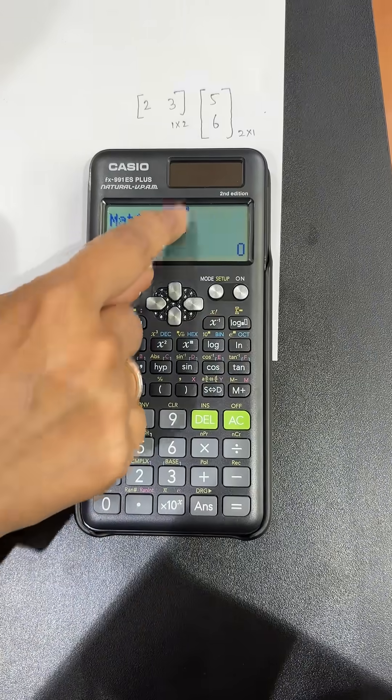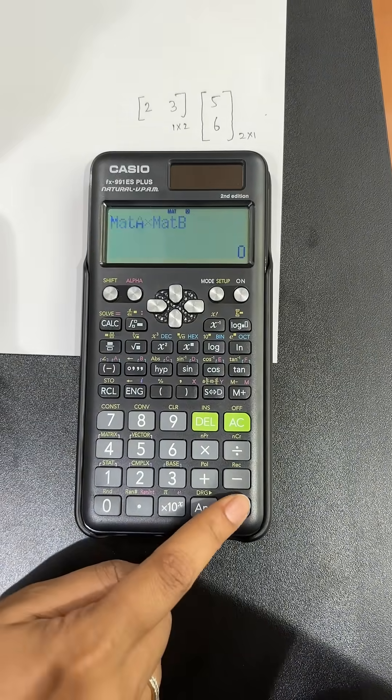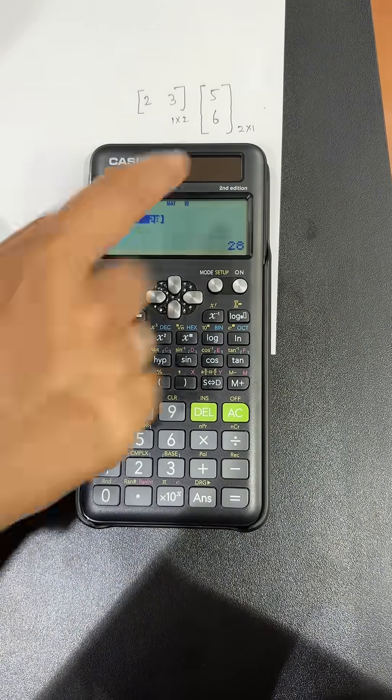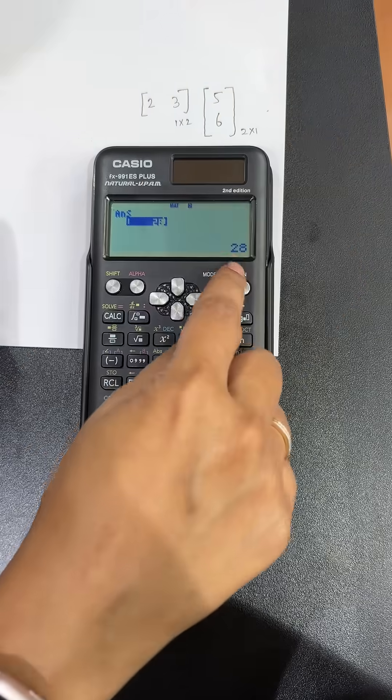So mat A into mat B—these two matrices give us the answer as 28. It gives you a 1 x 1 matrix of 28.